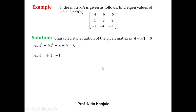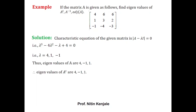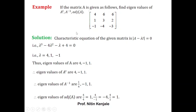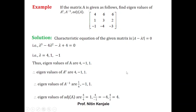Since eigenvalues of A and its transpose are the same, eigenvalues of A transpose are also 4, 1, and −1. Since 1/λ is eigenvalue of A inverse, eigenvalues of A inverse are 1/4, 1, and −1. For adjoint of A, eigenvalues are det(A)/λ. Here det(A) = 4, so eigenvalues of adjoint A are 4/4 = 1, 4/1 = 4, and 4/(−1) = −4.